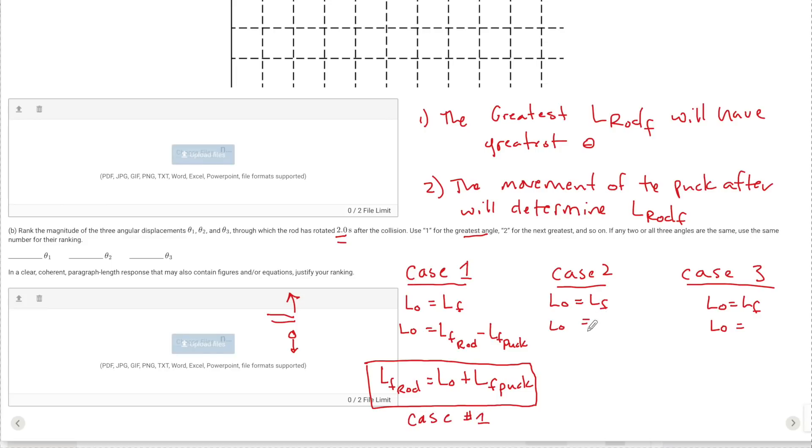I'm going to do the same exact thing and I'm going to say L final of the rod plus L final of the puck. But in the second case the puck does not move. So it has no angular momentum. So I know that the L final for the rod in the second case is going to be just equal to that initial angular momentum.